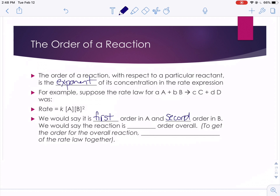If we said what's the order of the reaction overall, we'd say it's third order overall. To get the overall order for a reaction, you just add the exponents together.